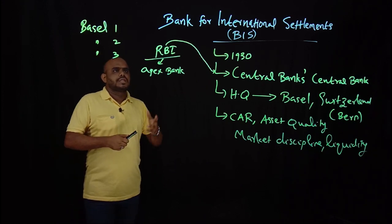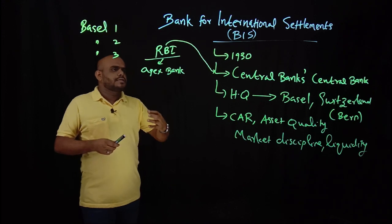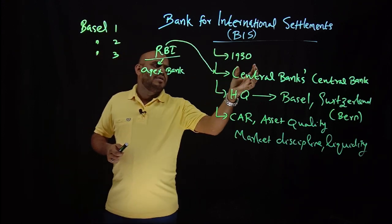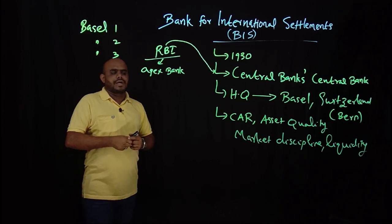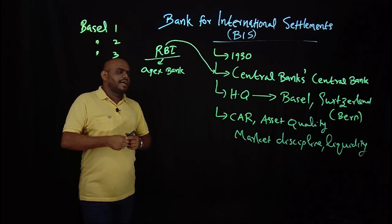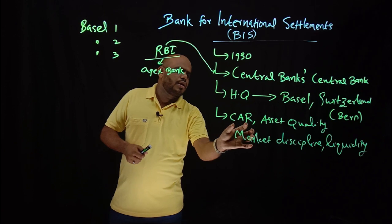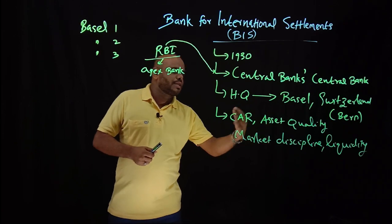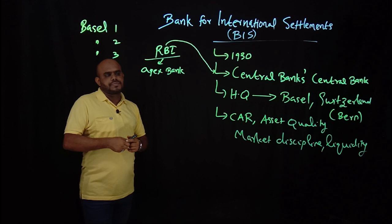The Bank for International Settlements acts as the central bank of all central banks. In coming videos we will discuss capital adequacy ratio, asset quality, market discipline, liquidity, and so on.